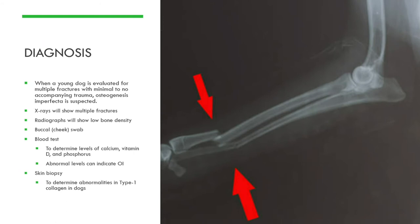Diagnosis typically begins when the animal is presented to the vet with multiple fractures without any known cause. X-rays will show multiple fractures, and radiographs can show low bone density. For a definitive test, a buccal — or cheek — swab can be sent off to test for mutations in one of the two genes mentioned. Blood tests can determine levels of calcium, vitamin D, and phosphorus, since abnormal levels can indicate the disease. A skin biopsy can also determine abnormalities in type 1 collagen. There are different types of testing that vary in price, but suspicion usually begins with multiple small fractures.